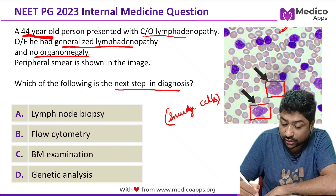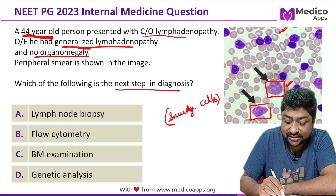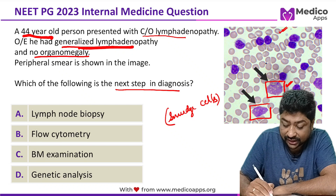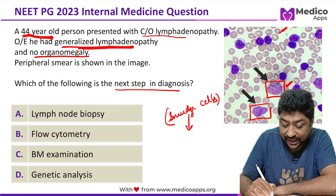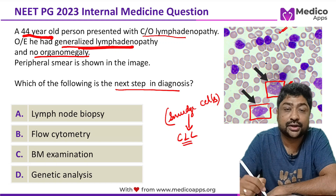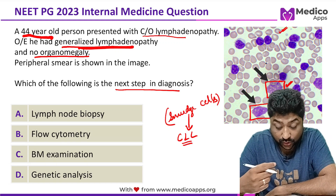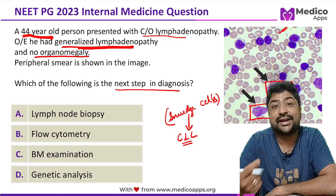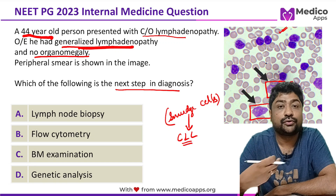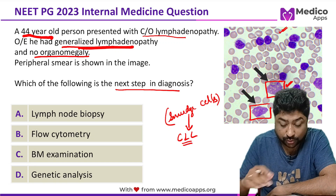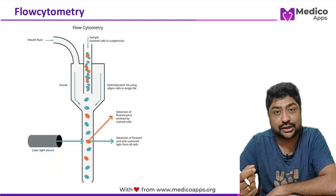Based on the presence of smudge cells and generalized lymphadenopathy with no organomegaly, we are thinking towards a diagnosis of CLL. Now what should be our next step to further confirm the diagnosis? Before getting into the options, let me talk a little about flow cytometry.